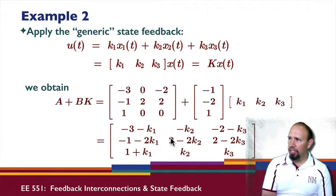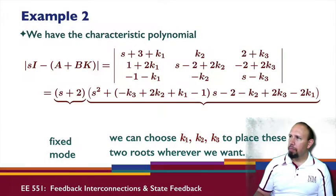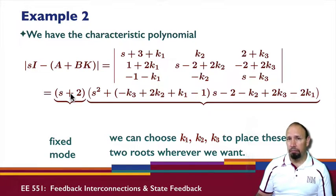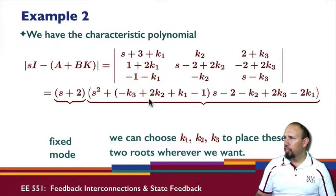If I compute the characteristic polynomial of A plus BK, I get this. It turns out I can factor out this quantity s plus 2. This shows that we have a state feedback fixed mode, but the state feedback fixed mode is stable. Our system is not controllable, but at least the uncontrollable part is stable. Then I can choose K1, K2, and K3 to pick the roots of this polynomial.